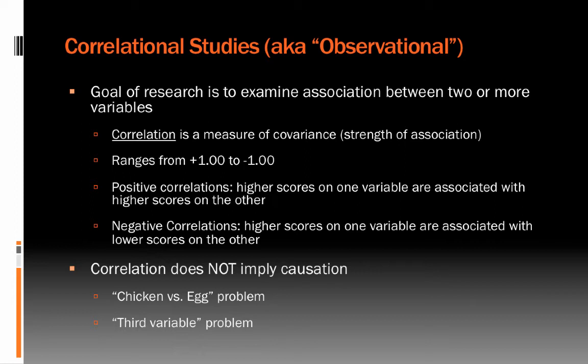Negative correlations are somewhat the opposite — higher scores on one variable are associated with lower scores on the other. For example, physical activity may be negatively correlated with fat consumption in the diet, meaning more active people consume less fat and less active people consume more fat. As one goes up, the other goes down. That's a negative correlation.